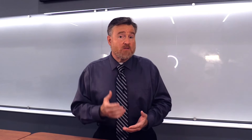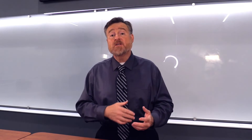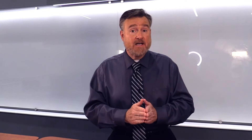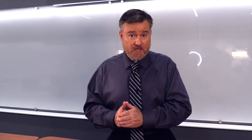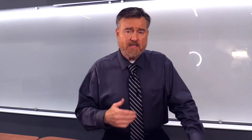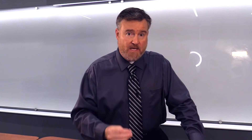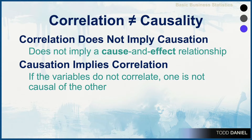Let me summarize what we need to know about the relationship between correlation and causation. Correlation does not imply causation — just because a correlation exists does not mean that there is a cause and effect relationship between the variables. On the other hand, causation does imply correlation. If you're trying to make the case that a certain intervention necessarily causes an outcome, those two variables will be correlated. If the variables do not correlate, you can be sure that one variable is not causal of the other.